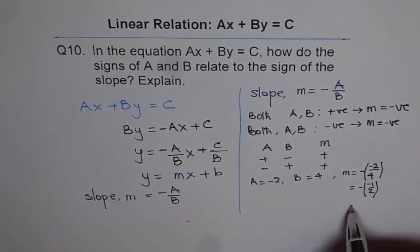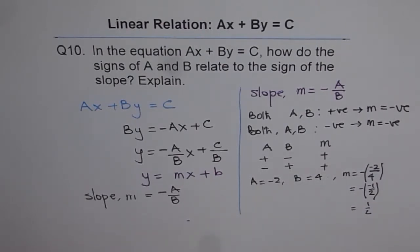You get plus. So, when there are different signs, you get positive slope. Now, we can summarize.